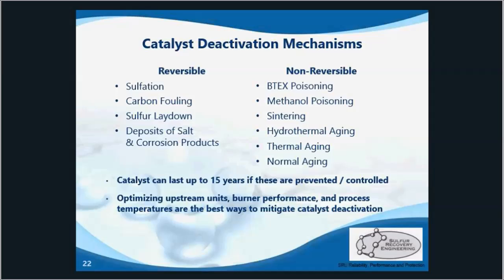Thermal aging is caused by thermal excursions or sulfur fires in the catalyst beds. Temperatures above 1300 degrees Fahrenheit, which are all too easy to obtain during a serious sulfur fire, can result in fusing of the catalyst into large solid pieces. Soot deposition and liquid sulfur deposition on top of the catalyst results in plugging of the converter beds. These aren't technically deactivation mechanisms, but they are very problematic because they do plug it up and lower your activity.